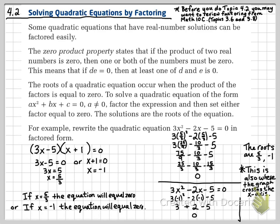those are going to be the x-intercepts of the graph. So we have three things now that we can tie together. The roots of the quadratic equation, the solutions of our quadratic equation, and the x-intercepts of the graph are all going to be the same.